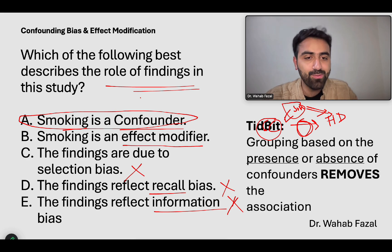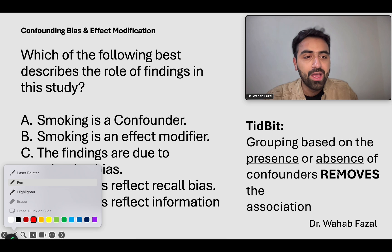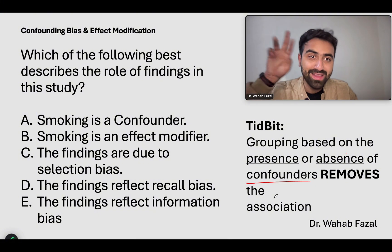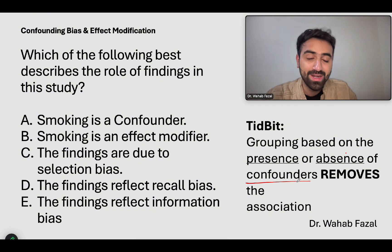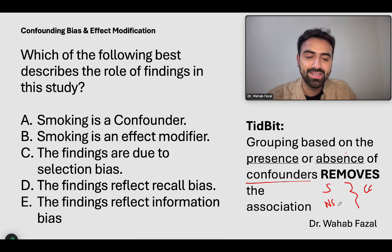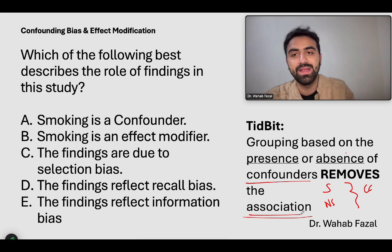The tidbit to learn from this example: grouping based on the presence or absence of confounders removes the whole association between the things we were thinking. As soon as we made groups based on smoking and non-smoking and made coffee consumption similar between the two groups, the effect vanished. We removed the false association that we had made.